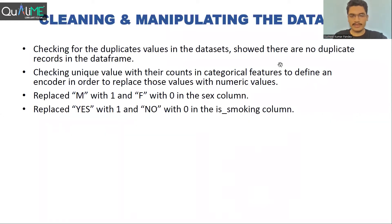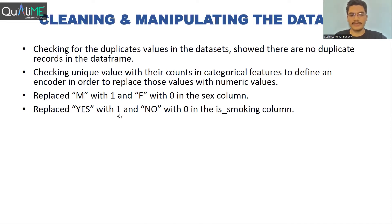After checking the outliers, we did some data manipulation: we replaced all string values in the columns with numeric values. For example, we replaced 'M' with 1 and 'F' with 0 in the sex column, and 'yes' with 1 and 'no' with 0 in the 'is smoking' column. Similarly, we did some imputations on the other columns as well in order to pass the dataset to the model.